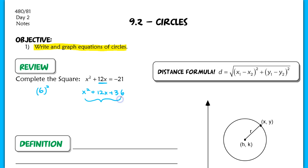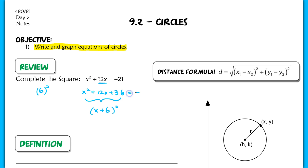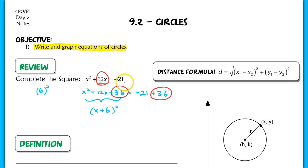This has now created a perfect square. On the left-hand side, we'd have x plus 6 squared. However, on the right-hand side, we have to make sure we balance the equation. We can't just add 36 to the left-hand side; we have to add 36 to the other side as well. So we cut this term in half, square it, add it to one side, and add it to the other.